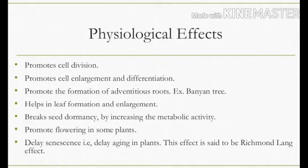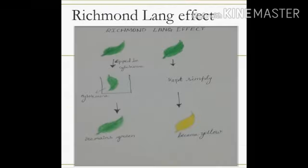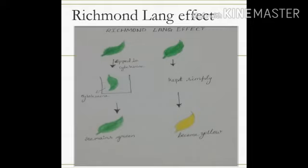What is the Richmond-Lang effect? The scientists took two leaves and dipped one leaf in a cytokinin solution. They observed that the leaf remained green for a few days. The other leaf was kept without treatment, and they noticed that it became yellow. From this experiment, they found that the leaf dipped in cytokinin remained green due to the cytokinin. Hence, cytokinin plays a main role in delaying senescence, and this is called the Richmond-Lang effect.